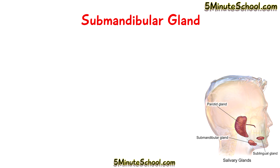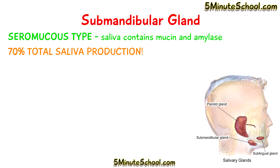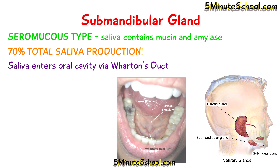The submandibular gland is located above the digastric muscles. It's classified as the seromucus type and produces the majority of saliva in the mouth — around 70%. Salivary secretions from the submandibular gland enter the oral cavity via a duct known as Wharton's duct, also known as the submandibular duct.